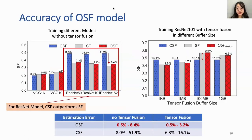This is the accuracy of the OSF model. When training different models without tensor fusion, the estimation error of our OSF model ranges from 0.5% to 8.4%, much lower than the CSF estimated by the C-to-C ratio, because CSF ignores overlapping between computation and communication. One interesting observation is that for ResNet models, CSF outperforms FSF, meaning transferring all gradients at once is more effective than transferring individual layers even when partially hidden by computation. When estimating scaling performance with tensor fusion, OSF also achieves lower errors than CSF, and the buffer size can affect the scaling factor — it is not simply the case that bigger is better.